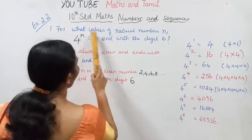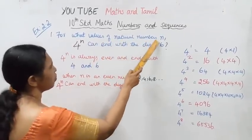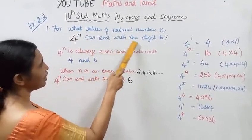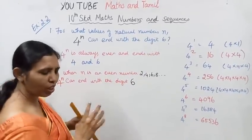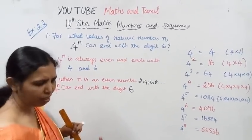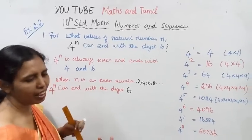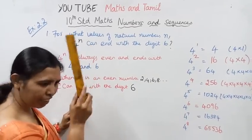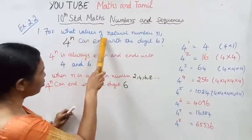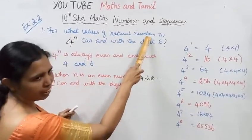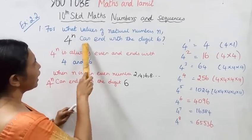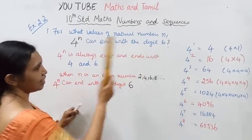For what values of natural numbers n, can 4 power n end with the digit 6? Let's take a look at this problem.